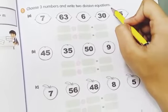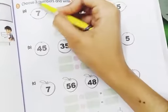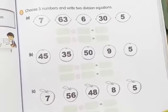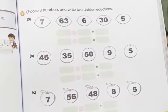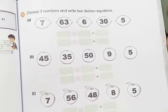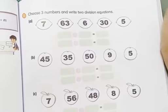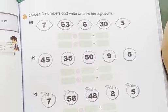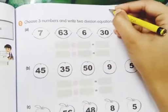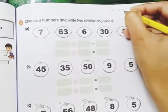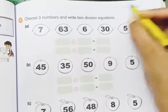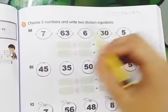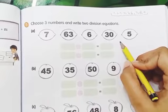The problem is, how can we find the correct three numbers that make two division equations? For this purpose, we use the multiplication method. We multiply those numbers which are less than 10 — meaning 1, 2, 3, 4, 5, 6, 7, 8, 9. We multiply these numbers present in the equation to find out the correct three numbers.